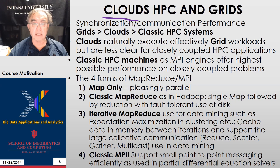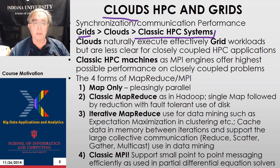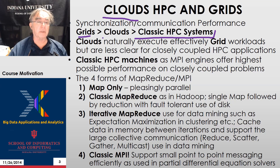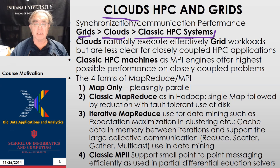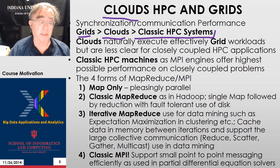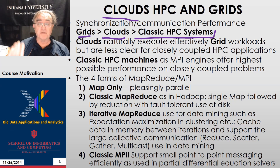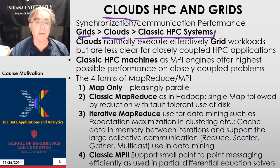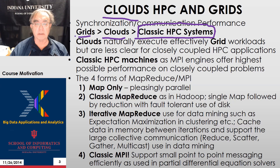Now let's see how clouds fit in. HPC systems have the lowest synchronization costs and the highest communication capability. Grids have the worst, because they are typically distributed over the world, so they have long delays just from communication time. Clouds are in between — they may or may not be distributed, but the virtualization they tend to use makes it difficult to keep nodes together, which is key in high-performance computing. There is a hierarchy: grids are the least coupled, then clouds, then classic HPC systems.